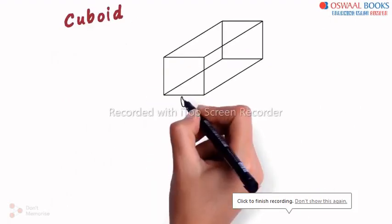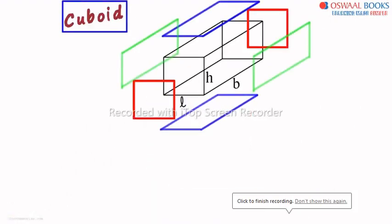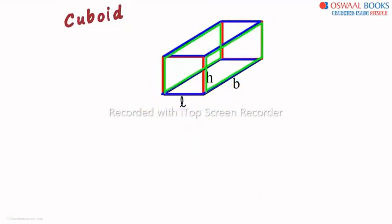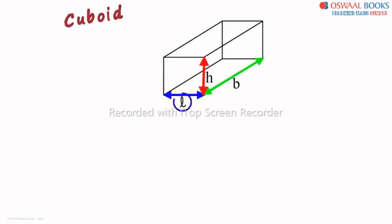This three-dimensional shape is called a cuboid. It is bounded by rectangles from all sides. The most important thing we should know about a cuboid is that it is defined by its length, breadth and height. We call them L, B and H respectively.